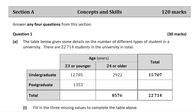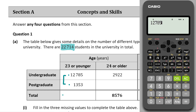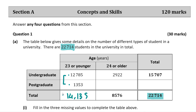In question A we're given a table which gives some details on the number of different types of students in a university. We're told that there are 22,714 students in the university in total. Part 1 asks us to fill in the missing values, so we'll need our calculators. For this box here we're going to add up the undergraduates who are 23 or younger and the postgraduates who are 23 or younger, and we get 14,138.